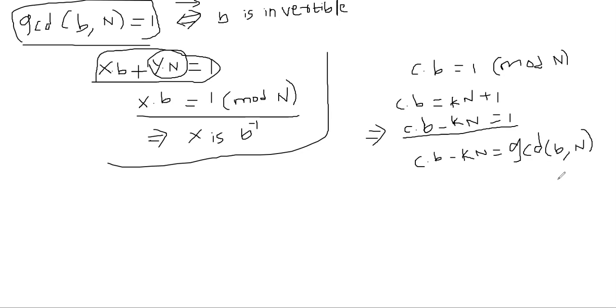And why do you think gcd of b comma n is more than, why can't gcd of b comma n be more than one? If it was more than one, we have a problem because we learned that gcd is the smallest number that can be written as a linear combination of b and n. Therefore gcd of b comma n must be one.